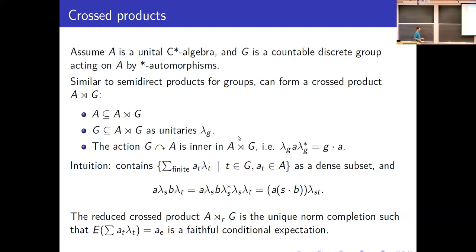There are always two canonical ways to complete this algebraic cross product of finite sums. There's always a universal way, which is a sort of largest completion, and there's always a reduced way or a spatial completion as well. You can actually define the reduced cross product in a very nice way that avoids any spatial representation, by saying it's the unique norm completion that makes the map sending a sum of a_T lambda_T to the coefficient at the identity a faithful conditional expectation.